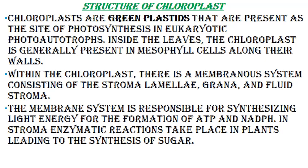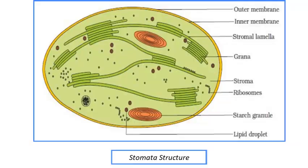Structure of chloroplasts: chloroplasts are green plastids present as the site of photosynthesis in eukaryotic photo-autotrophs. Inside the leaves, the chloroplast is generally present in mesophyll cells along their walls. Within the chloroplasts, there is a membranous system consisting of the stroma, lamellae, grana, and fluid stroma. The membrane system is responsible for synthesizing light energy for the formation of ATP and NADPH. In the stroma, enzymatic reactions take place leading to the synthesis of sugar. The structure includes outer membrane, inner membrane, stroma, lamellae, grana, ribosomes, starch granules, and lipid droplets.